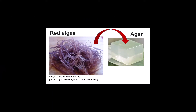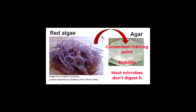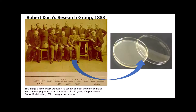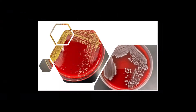Agar is a mixture of two polysaccharides. It comes from red algae, and it's been used in Japanese cooking since at least the mid-1600s. Agar works really well in the lab because of its convenient melting point, it has good gel stability at incubator temperatures, and microbes don't digest it like they do gelatin or potatoes. Later in the same decade, Julius Petrie, who was also an assistant in Koch's lab, designed the Petri dish. So with the development of agar and the Petri dish, growing microbes on solid media in the laboratory became much easier.